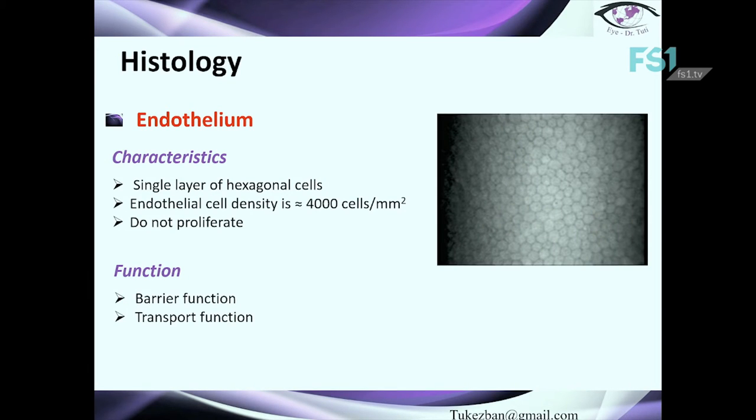The endothelium is a single layer of hexagonal cells. The normal cell count is about 4,000 cells in adults and approximately 2,500 cells per square millimeter in newborns. These cells do not proliferate, and the number of cells decreases with age. The main functions are barrier function and transport function.